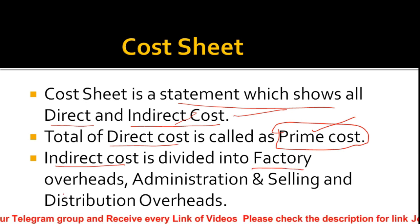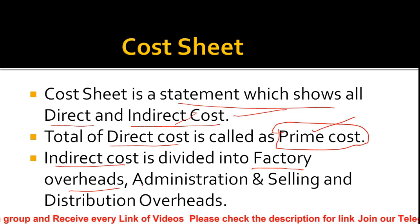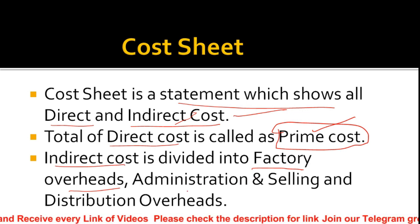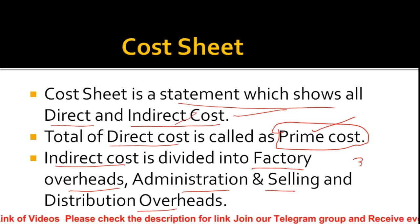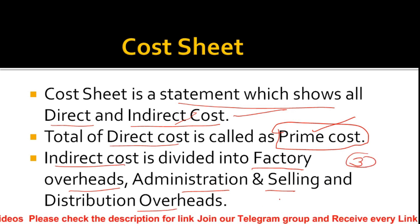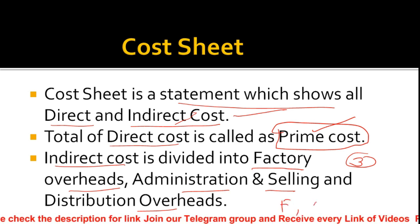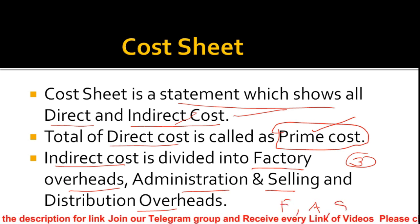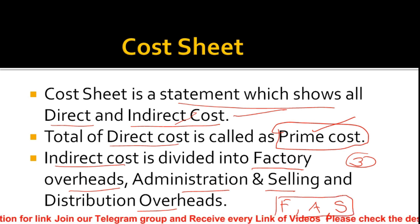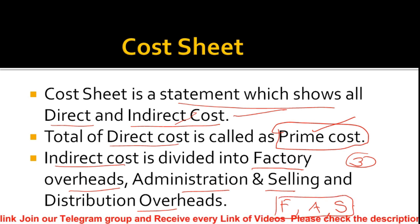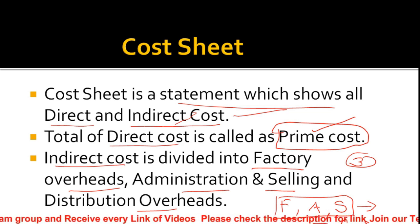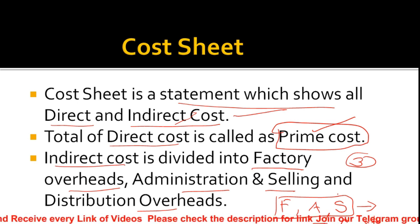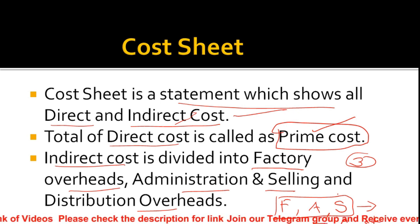The three types of indirect costs are: one is factory overheads, two is administration overheads, and three is selling and distribution overheads. Indirect costs are not directly related to your production — they are related indirectly.